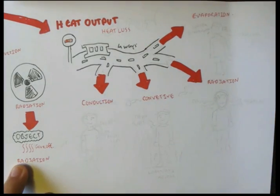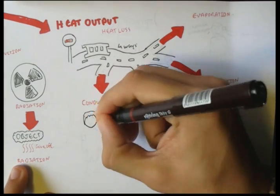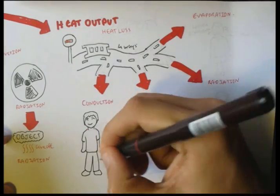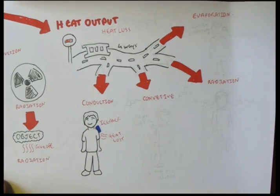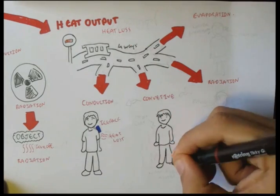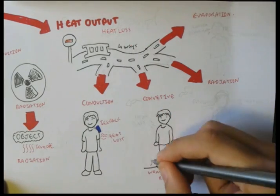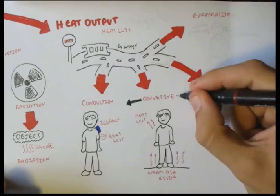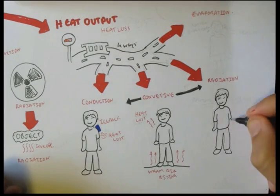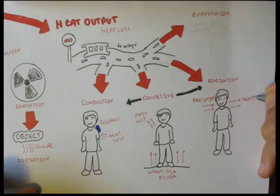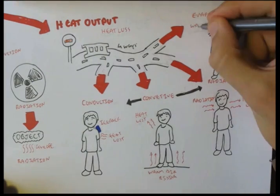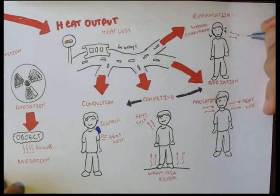Conduction for heat output is different from conduction in heat input, because instead of a hot object touching your body, it's a cold object, and this results in the body emitting heat out. Convective is essentially the air, or hot air rising from the ground, which also causes your body to emit heat. Convective also strengthens heat loss through conduction and radiation. Radiation is heat being absorbed and emitted by your body from surrounding objects. Evaporation is when water evaporates from skin surfaces, causing heat to be brought out with it.